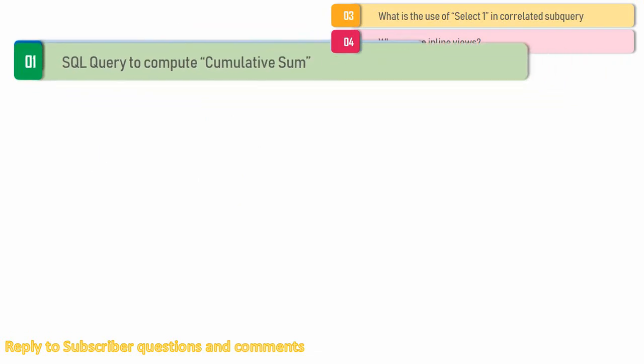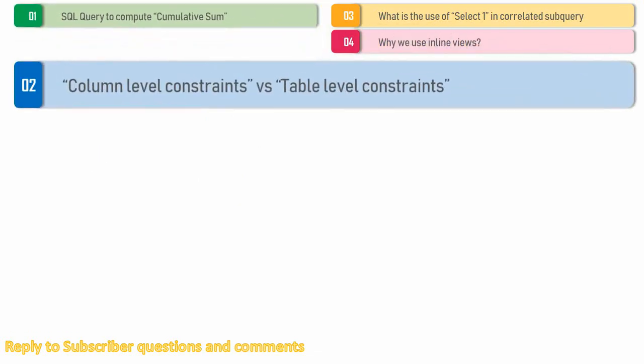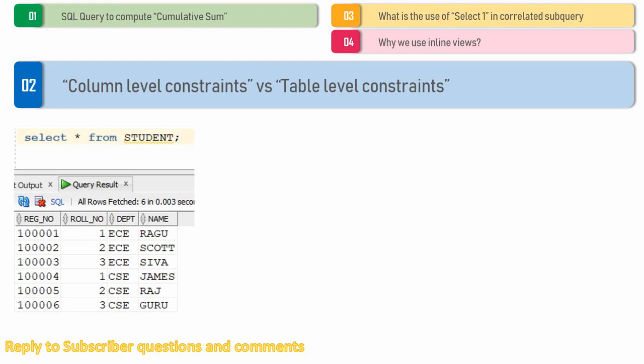The second question is: column-level constraints versus table-level constraints. Here is a student table with register number, role number, department, and name. A register number should be unique across the college. A role number starts from one in each department, so the combination of role number and department should be unique — for example, role 1 in ECE and role 1 in CSE can both exist, but the combination must be unique.